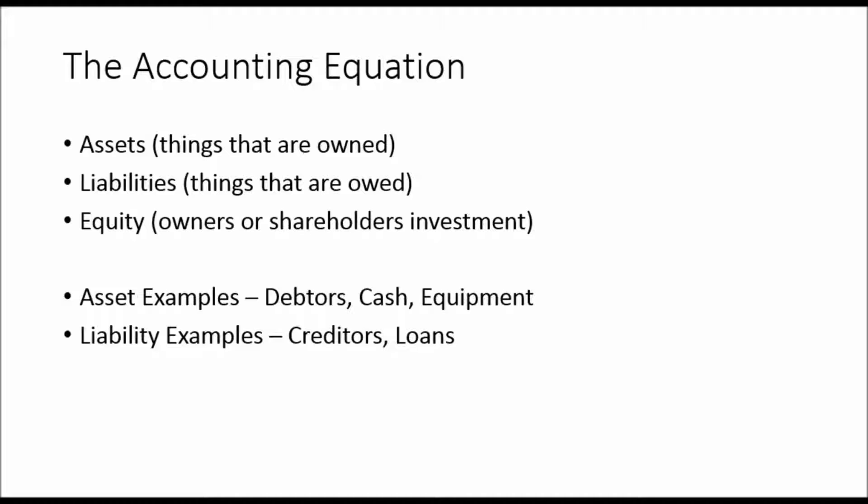Liability examples can include things like creditors — cash or money that we owe to other people, creditors being our suppliers. Loans, bank loans — this is cash that we owe. It's something that we owe.